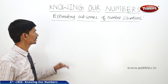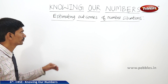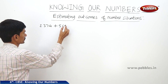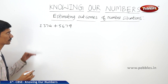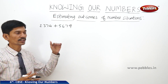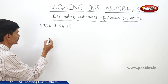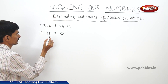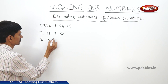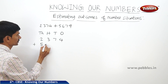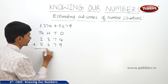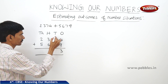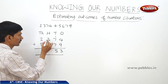Now let us see the next topic: estimating outcomes of number situations. If you want to add 2 or more numbers like 2374 plus 5679, we write the numbers one below the other so that the place values align — 1s, 10s, 100s, and 1000s places. We add the 1s places first: 9 plus 4 equals 13, carry 1 to the 10s place.